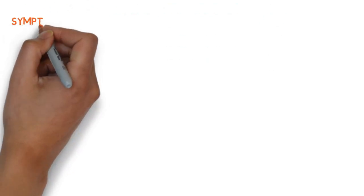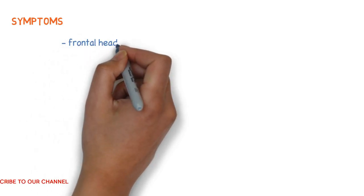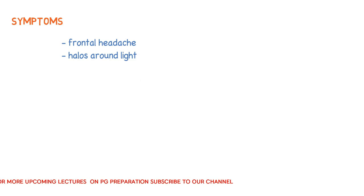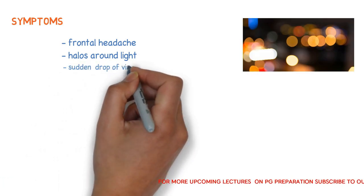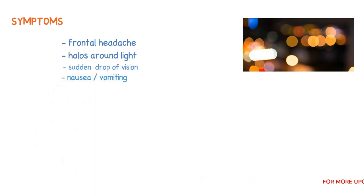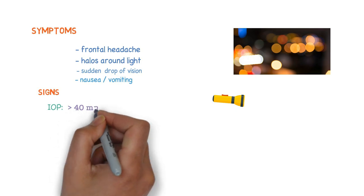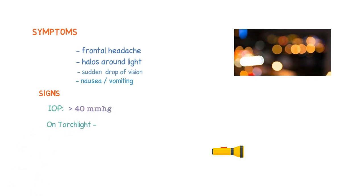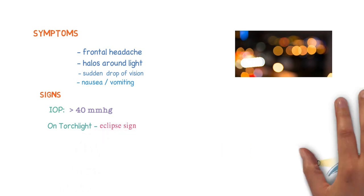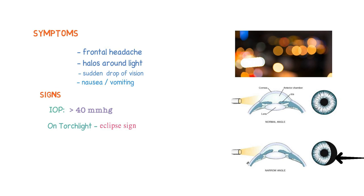The symptoms include frontal headache due to high intraocular pressure, halos around lights due to corneal edema, sudden drop of vision, and nausea and vomiting. The most important sign is intraocular pressure greater than 40 mmHg. In torchlight examination we can see the eclipse sign — a beam of light shown from the temporal aspect of the cornea toward the root of the nose produces a semicircular shadow of the iris in the nasal area, indicating the depth of the anterior chamber.